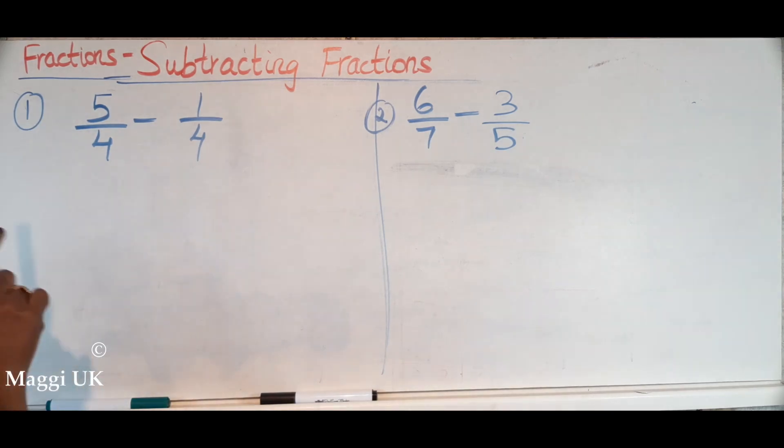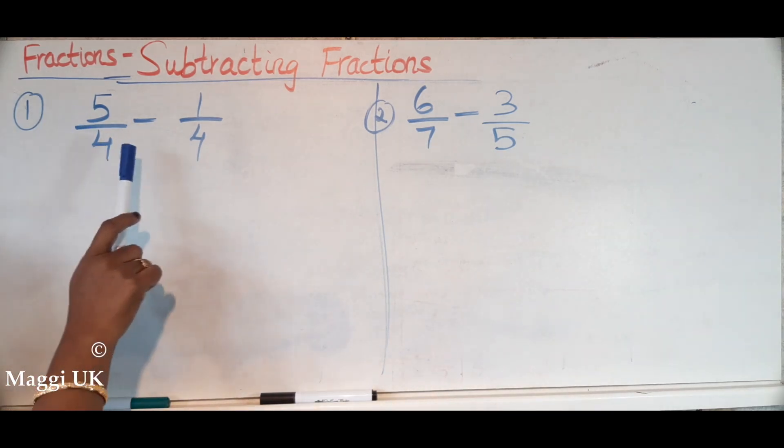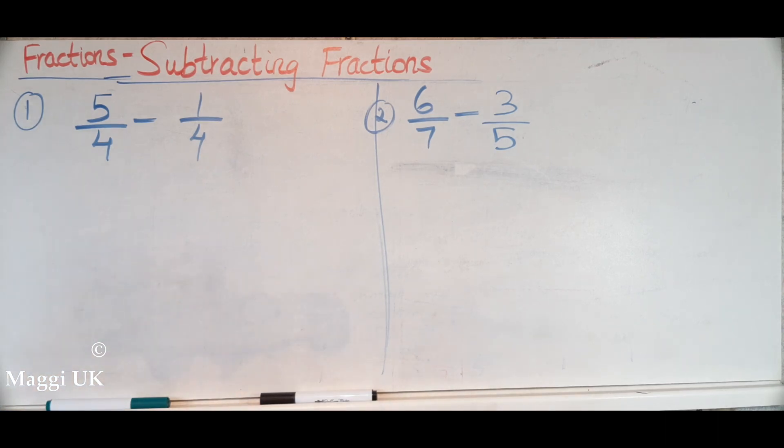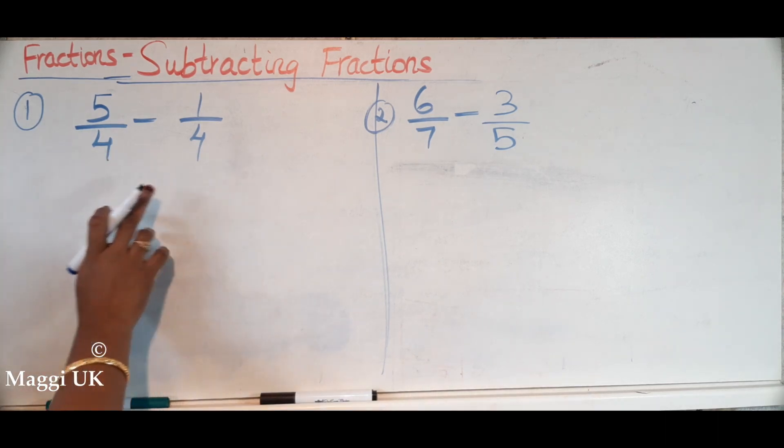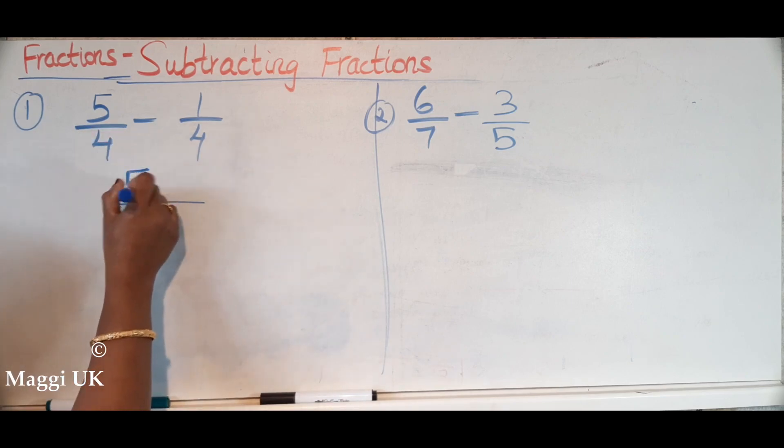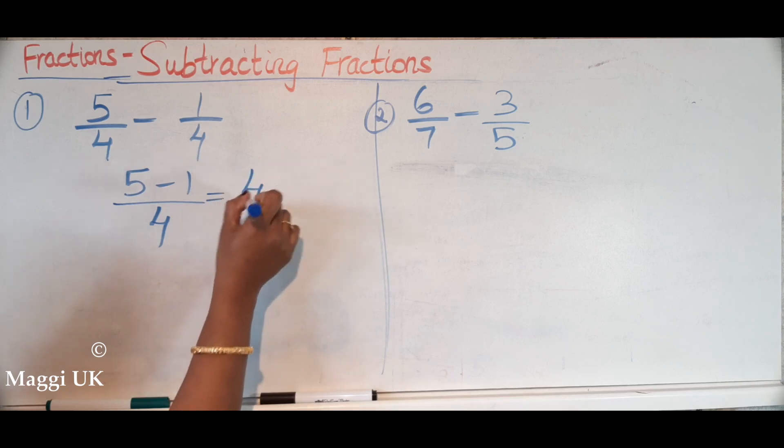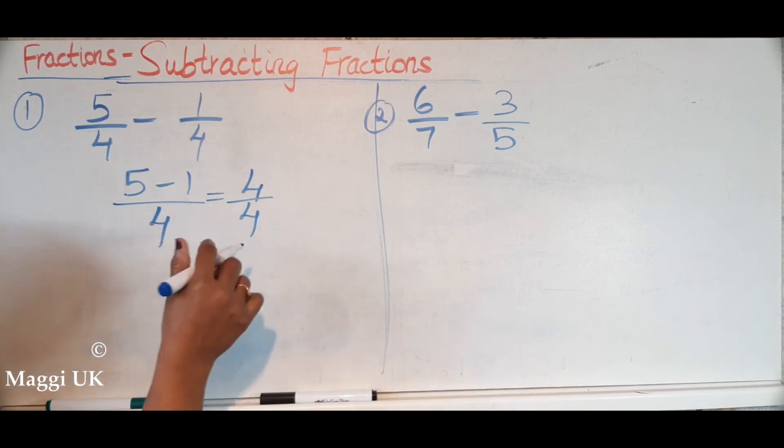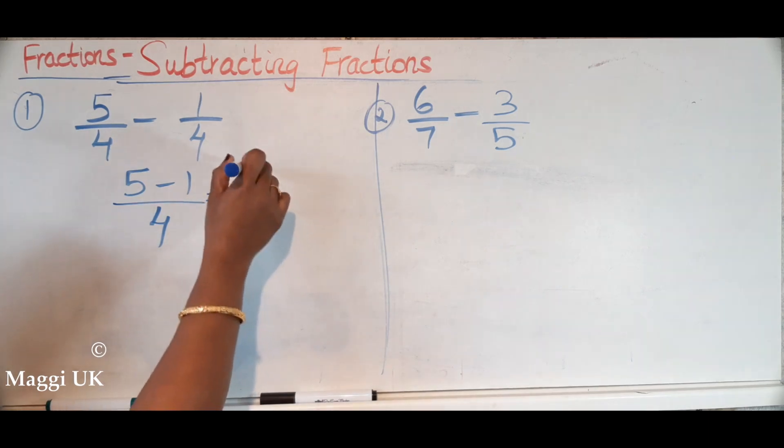The first thing is we have a number which is 5/4 take away 1/4. If you see here, it's the same thing we did. If you look at my previous video I've done adding fractions, it's the same but only the sign is going to be different. The common denominator here is 4. We take 4 here common, and then you take away 5 take away 1, that is 4. Four over four, what will happen after this? Four over four is nothing but you can write one whole of that number. Well done.